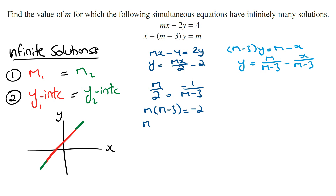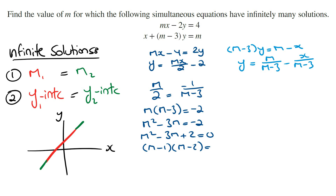Expanding this, we get m squared minus 3m is equal to negative 2. Bringing the negative 2 to the left-hand side, we get m squared minus 3m plus 2 is equal to 0. We now have a quadratic equation. Factorizing this, we get (m minus 1)(m minus 2) is equal to 0, and solving for m, m is equal to 1 or m is equal to 2.